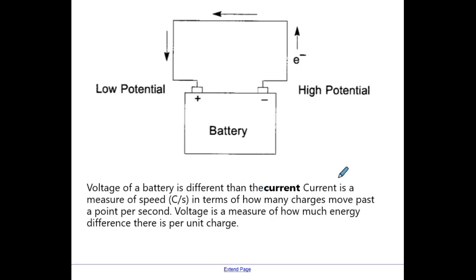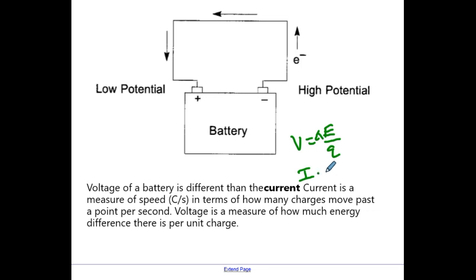I want you to know the difference between voltage and current, because these are often used as synonyms but they are not the same. We have formulas for both. Voltage is how much energy you have per charge — that's change in energy per charge. Current, where I is the symbol, is how many charges move per second. They are similar but they are different. You've probably seen current and voltage used if you took Chemistry 30.